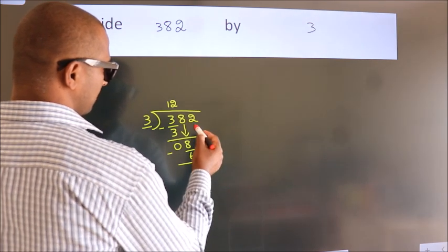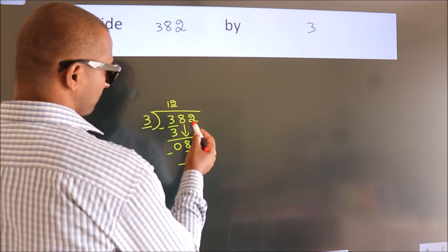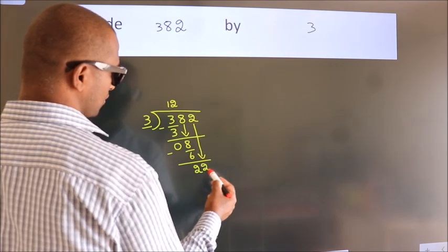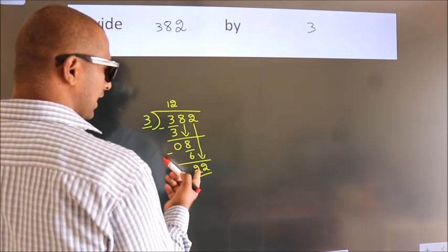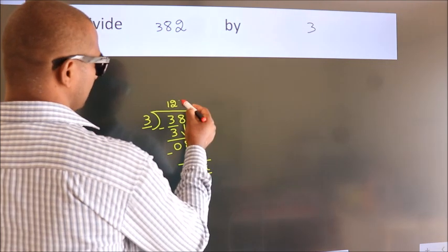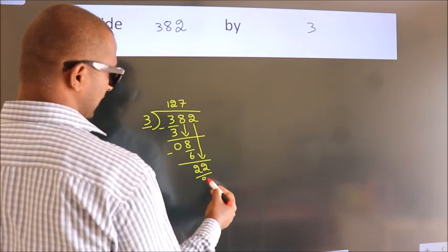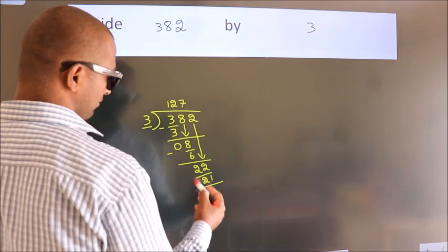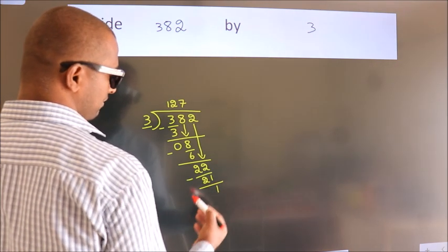After this, bring down the beside number, so 2 down, so 22. A number close to 22 in 3 table is 3 times 7, 21. Now we subtract, we get 1.